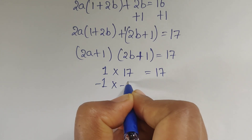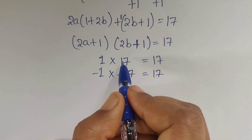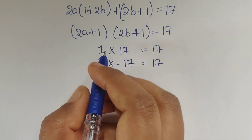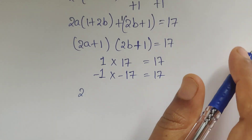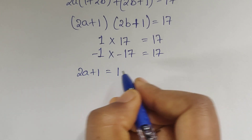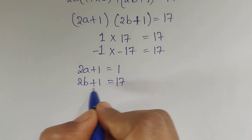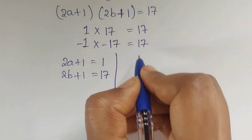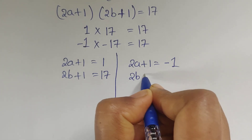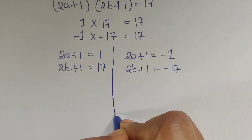So 17 equals 1 times 17. These are the two factors. Now we split these factors into two possibilities. First possibility: 2a plus 1 equals 1 and 2b plus 1 equals 17. Second possibility: 2a plus 1 equals minus 1 and 2b plus 1 equals minus 17.